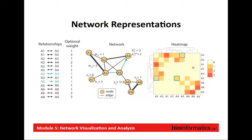This figure from the pre-reading reminds us that there are different ways of thinking about a network. If you're representing a network in a spreadsheet, you'll have a set of relationships in two columns — gene A connected to gene B — sometimes with a score like an interaction strength. This is the standard way of representing networks. You can also represent networks as a heat map, which is useful when the network is very densely connected.